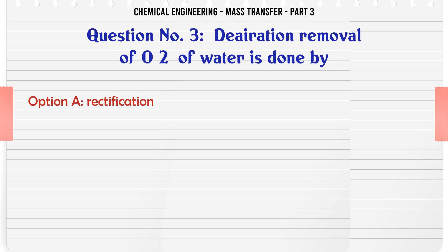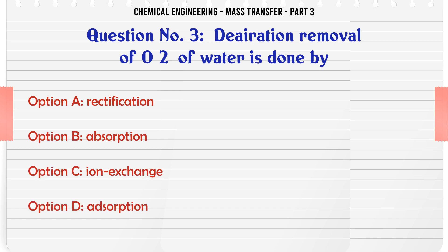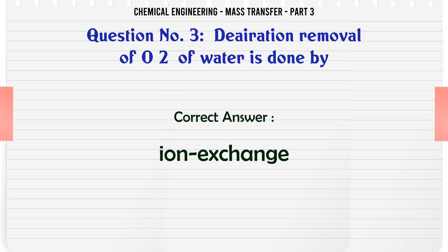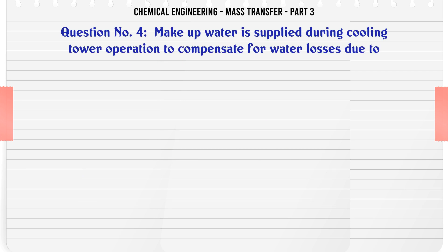Aeration removal of CO2 from water is done by: A) rectification, B) absorption, C) ion exchange, D) adsorption. The correct answer is: ion exchange.